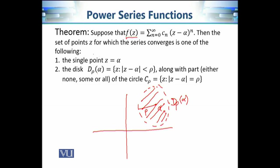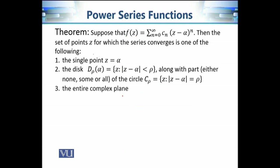Now what about the points on the boundary of this disk? We cannot say anything about those values of Z which are at the boundary. The infinite series can either converge for some, diverge for all, or converge for all points on the boundary — anything can happen. The third scenario is the entire complex plane, where the series converges for any complex number Z. These are the three possible scenarios.